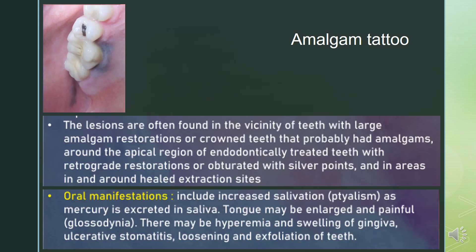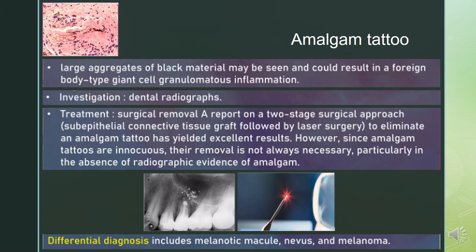Oral manifestations include increased salivation as mercury is increased in saliva. The tongue may be enlarged and painful — painful tongue is also called glossodynia. There may be hyperemia and swelling of gingiva, ulcerative stomatitis, and loosening and exfoliation of teeth.